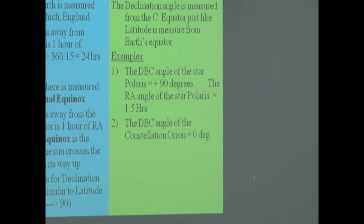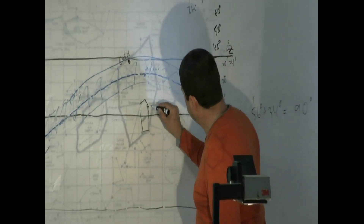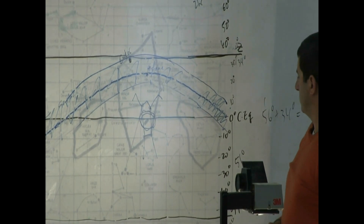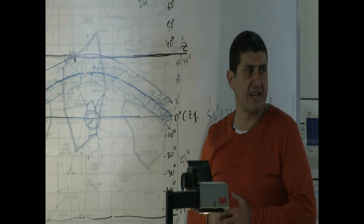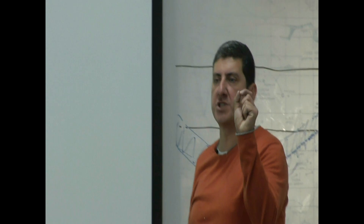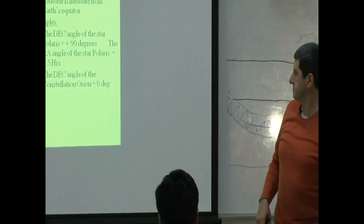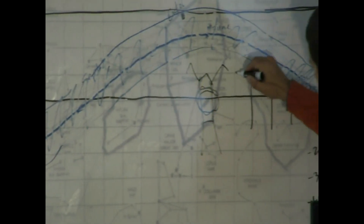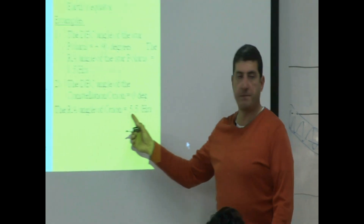Another example: the constellation Orion. By the declination of Orion, I mean the center of the constellation. Looking at the chart, Orion is right at zero declination — it's basically in the middle of the sky. For its RA, counting from zero: one, two, three, four, five, six — it falls between five and six hours, giving about 5.5 hours.